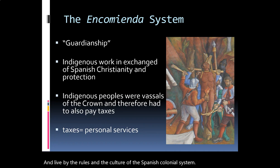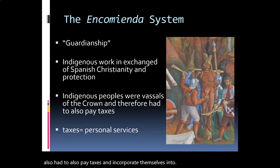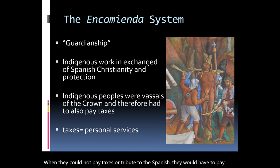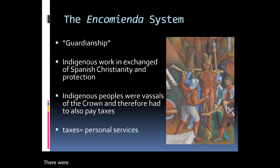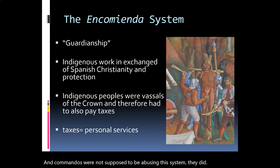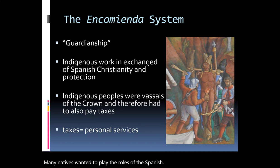Indigenous peoples were vassals to the crown and therefore had to pay taxes and incorporate themselves into the Spanish colonial system. When they could not pay taxes or tribute, they would pay through personal services — in some cases, slavery — even though Spanish colonial law stated that encomenderos were not supposed to abuse this system. They did. This led to a lot of resentment and resistance, and many natives did not want to play by the Spanish rules, though many others ended up becoming dependent on the missions and the system that was introduced.